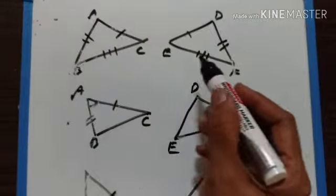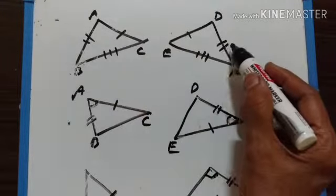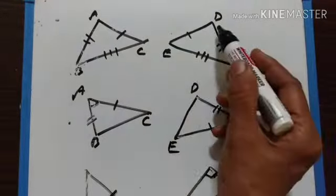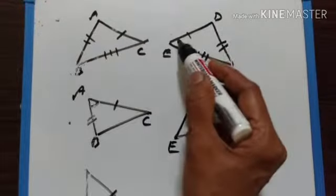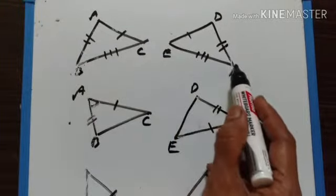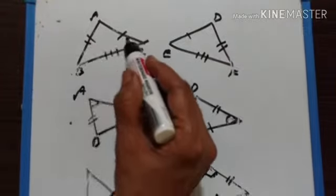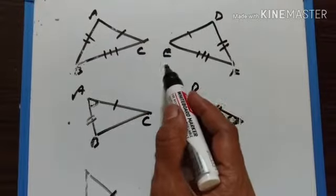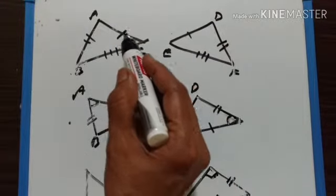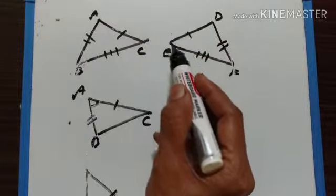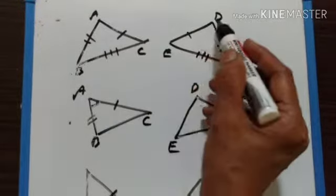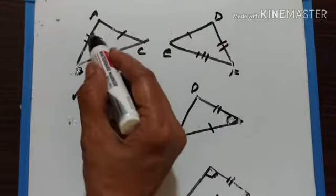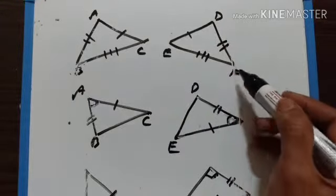Three sides of one triangle are equal to three sides of another triangle — AB is equal to DF, AC is equal to DE, and BC is equal to EF. These two triangles are said to be congruent, and the equal sides are said to be corresponding sides. AC and DE are corresponding sides, BC and EF are corresponding sides, and AB and DF are corresponding sides.